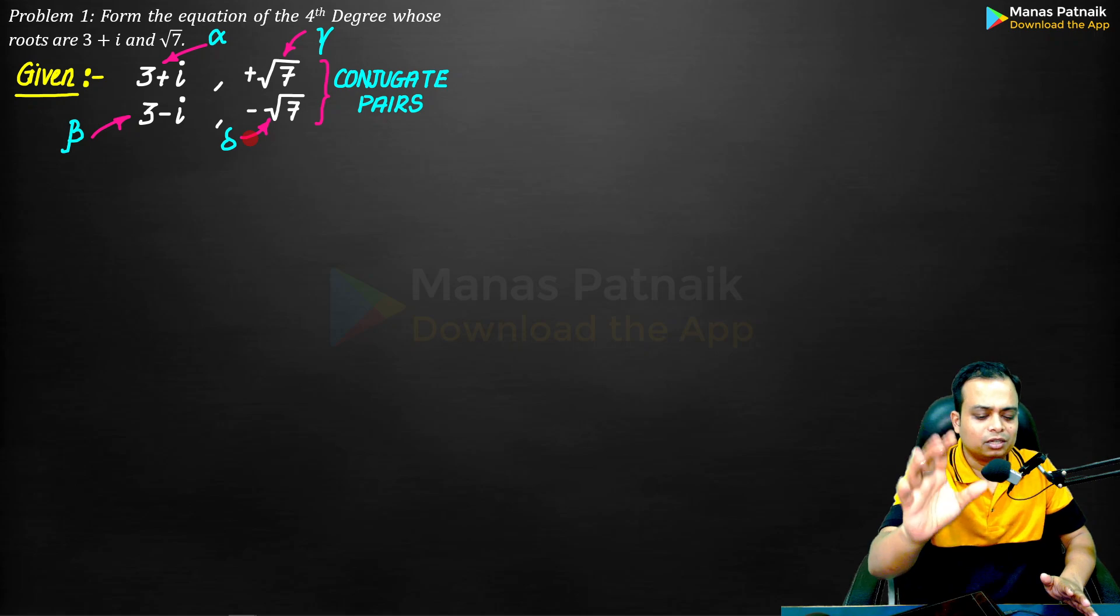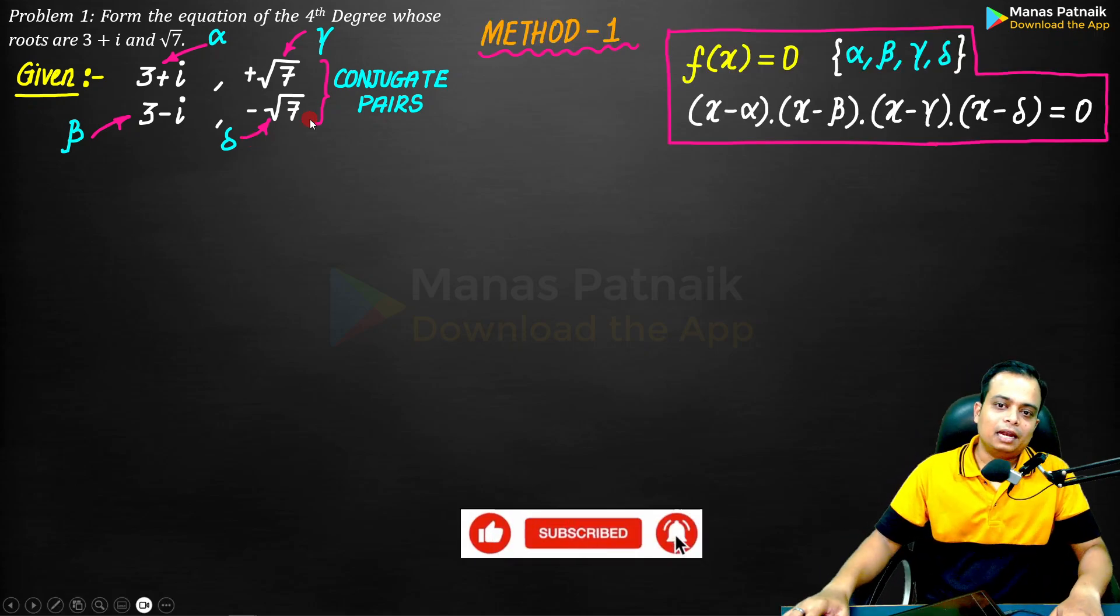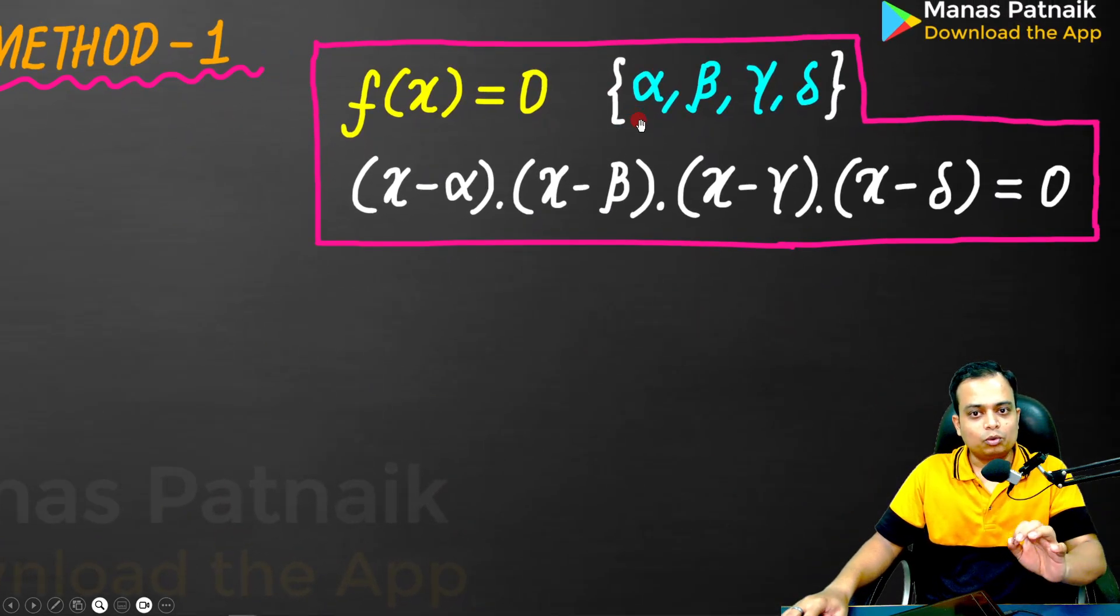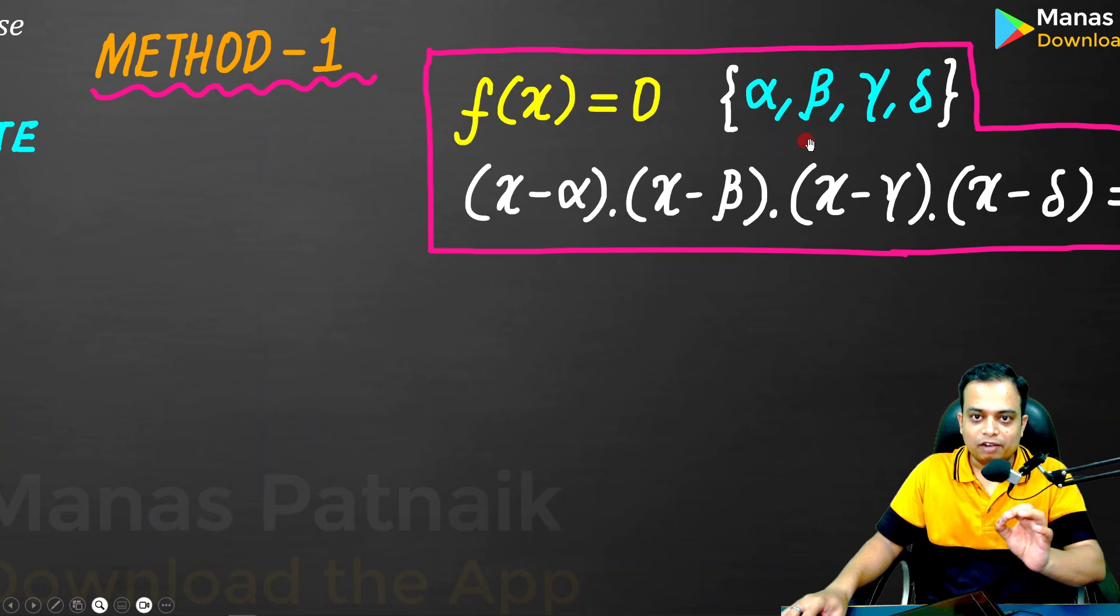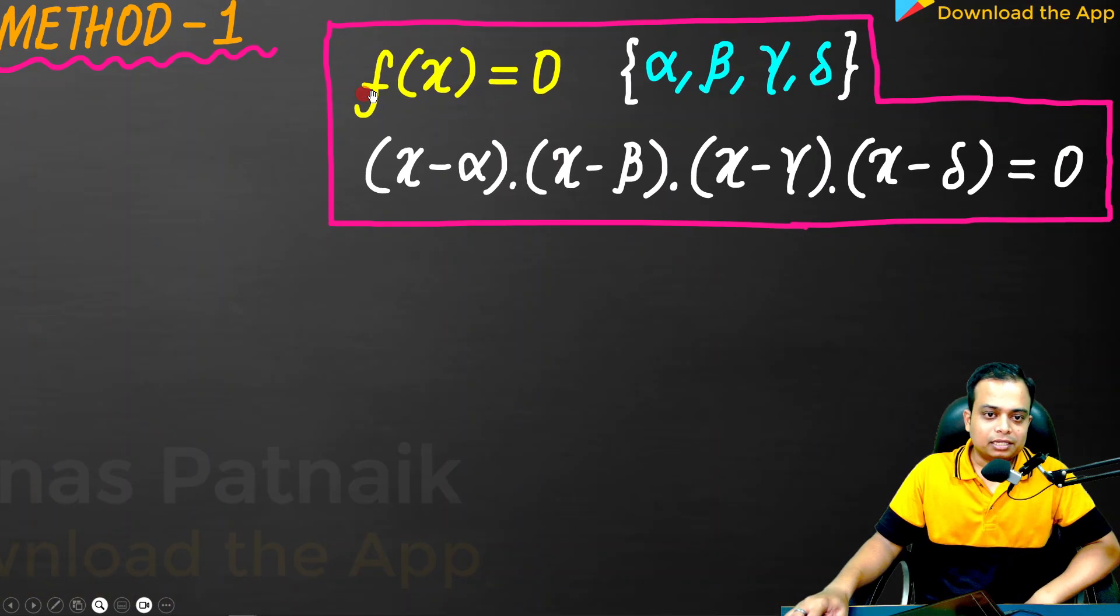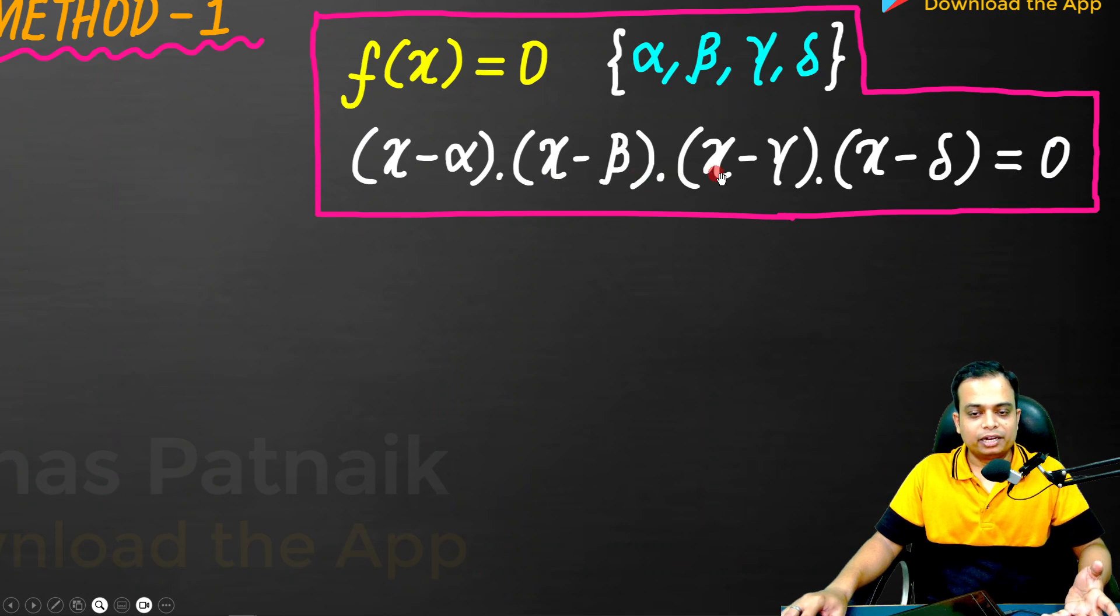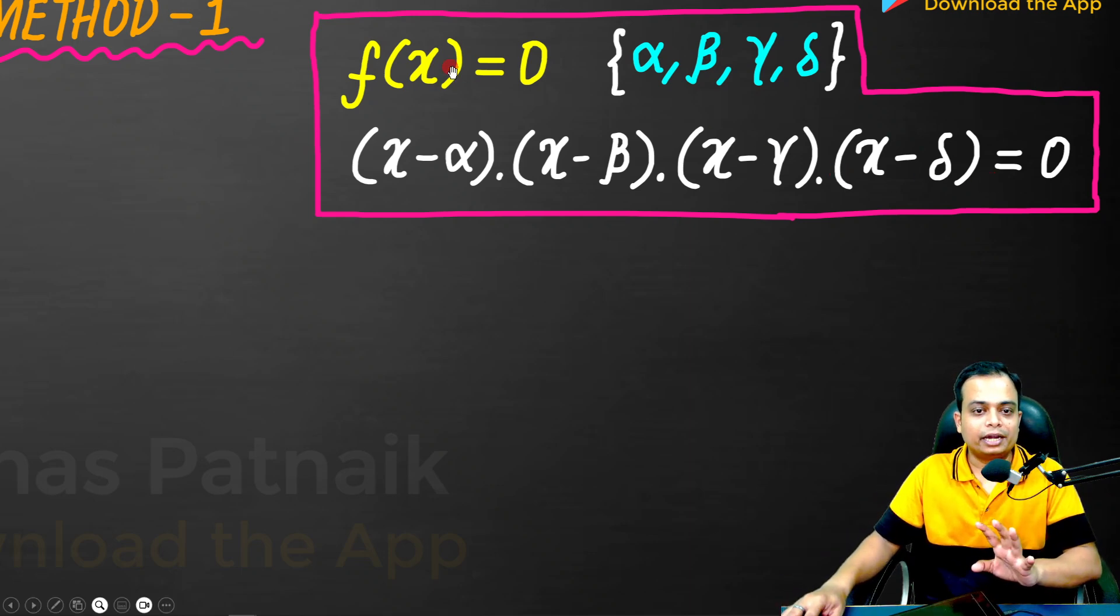Method number one: let's say f of x equals zero is the algebraic equation we want to frame. It has got four roots - why four? Because we've been clearly mentioned it is an equation of fourth degree, that is why four roots: alpha, beta, gamma, and delta. This algebraic equation can also be written in the factorization form: x minus alpha, x minus beta, x minus gamma, x minus delta. Multiply all of them and equate it to zero.